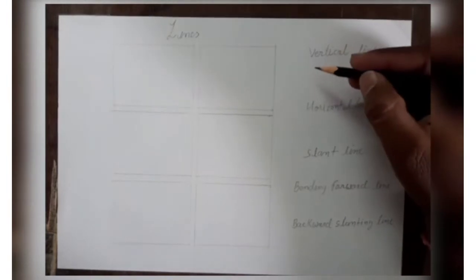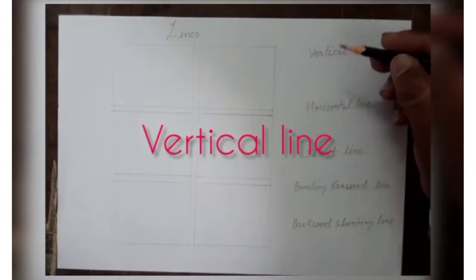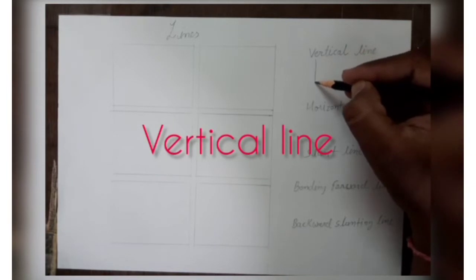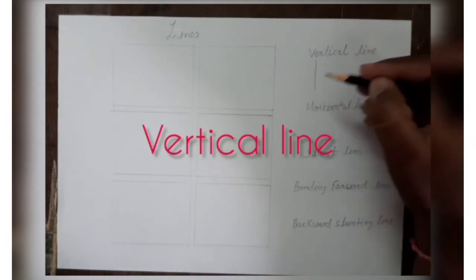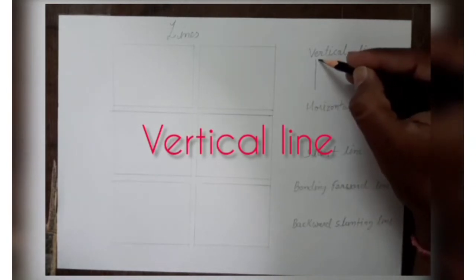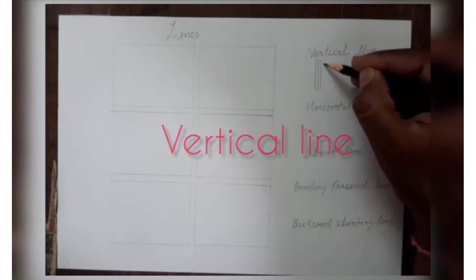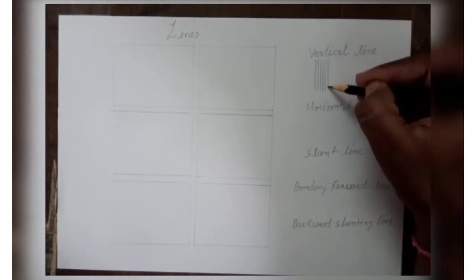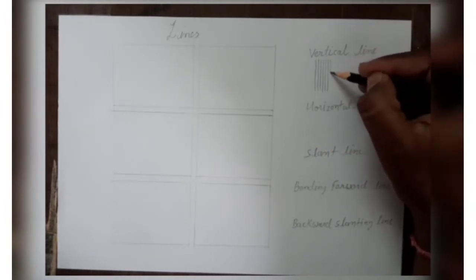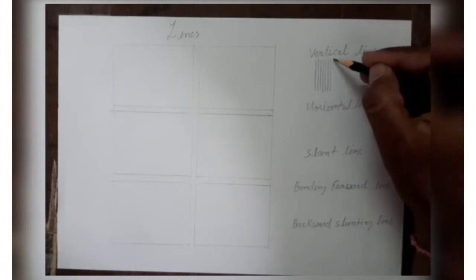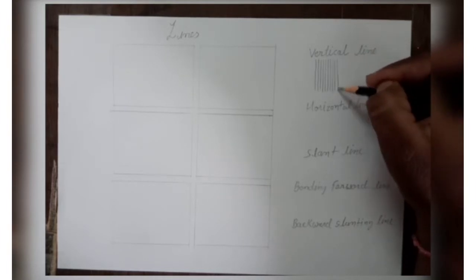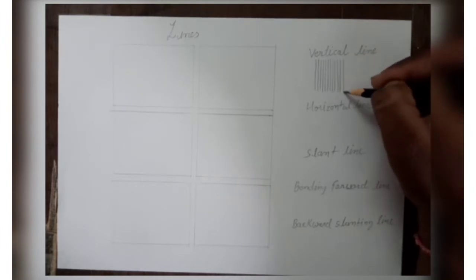Today I am going to show you first: vertical line — how to draw vertical line. From top to bottom, like this, we have to draw vertical line. You do not have to use an instrument; with your hand you have to draw.